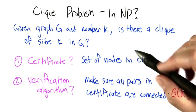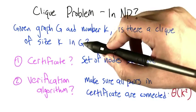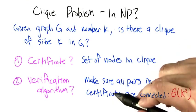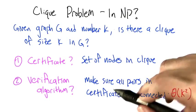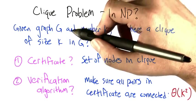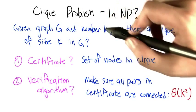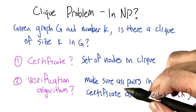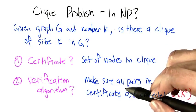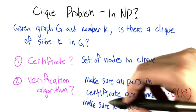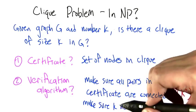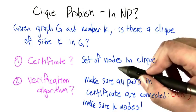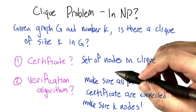Just to drive this point home: for every graph G that has a k-clique, there is a certificate that would cause the verification algorithm to say yes. But for any graph G that doesn't have a k-clique, there's no certificate you can give it that would cause this verification algorithm to say yes. The verification algorithm could also check to see that the certificate that you gave it actually consists of k nodes, just to be careful.